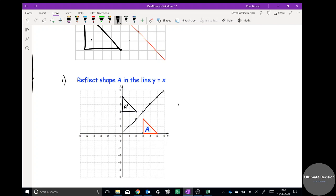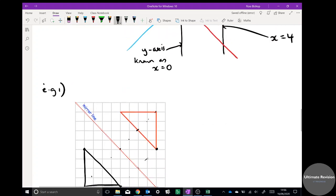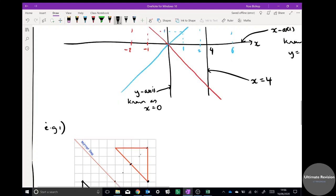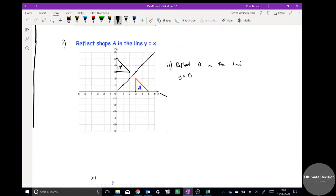You might be asked to reflect A in the line y = 0. y = 0, so the first thing you've got to do is draw that line on. Well, if we go back up here, y = 0 was the same as the x-axis. This line is already drawn on for us, this is y = 0, and I can reflect it in that line quite easily. There we go. I'm going to just label that A double dash because it's the second image.